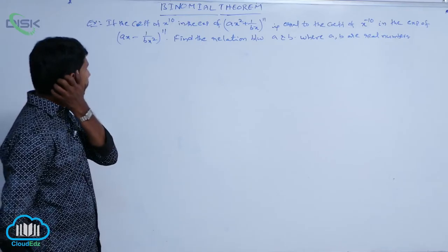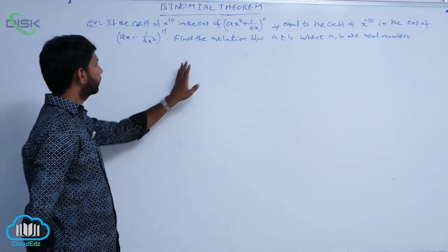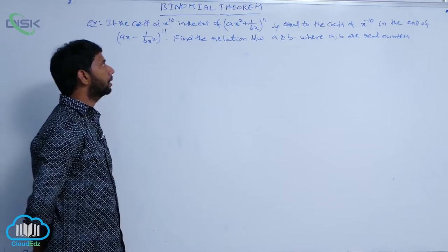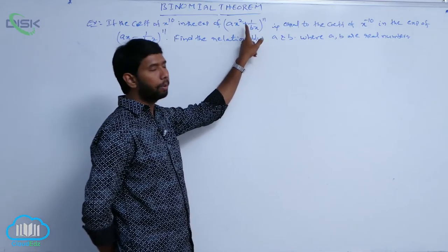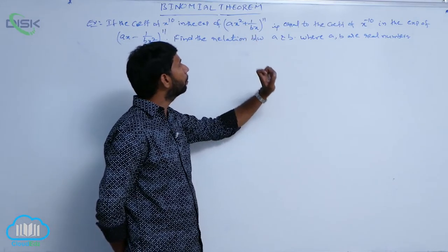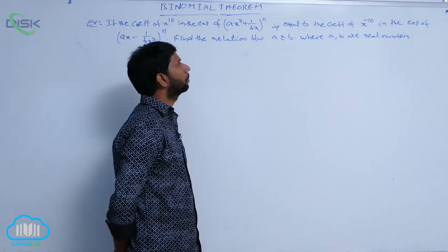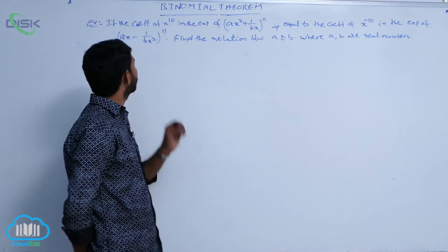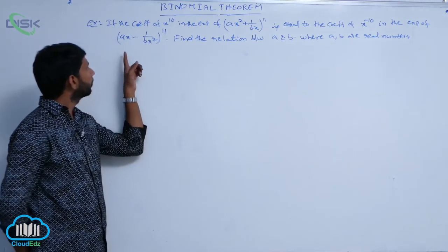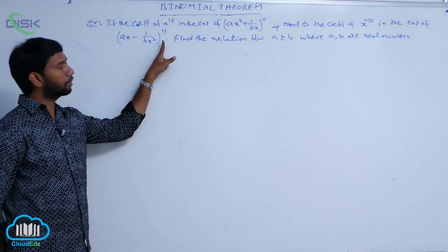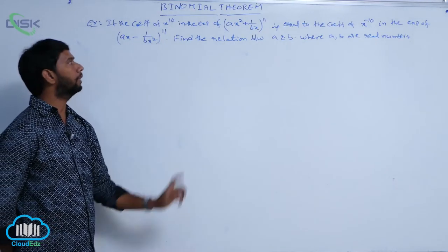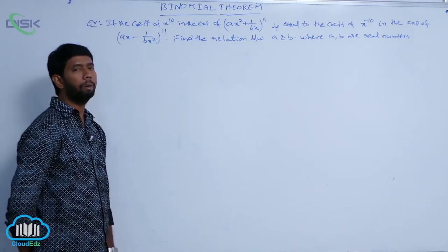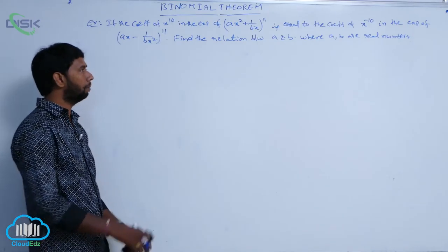If the coefficient of x power 10 in the expansion of (ax² + 1/bx)^11 is equal to the coefficient of x power minus 10 in the expansion of (ax - 1/bx²)^11, find the relation between a and b, where a and b are real numbers.